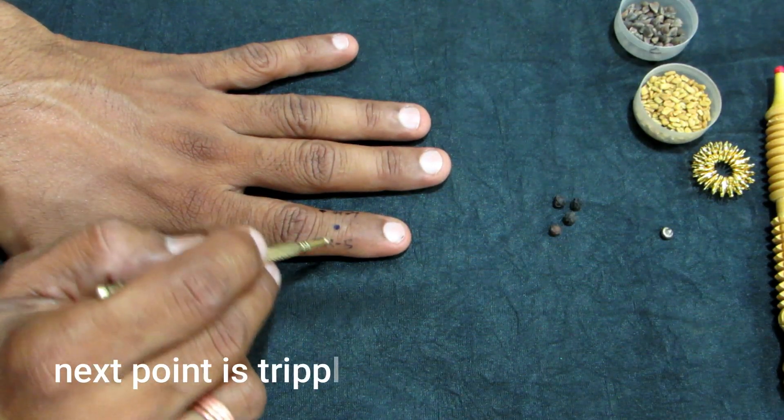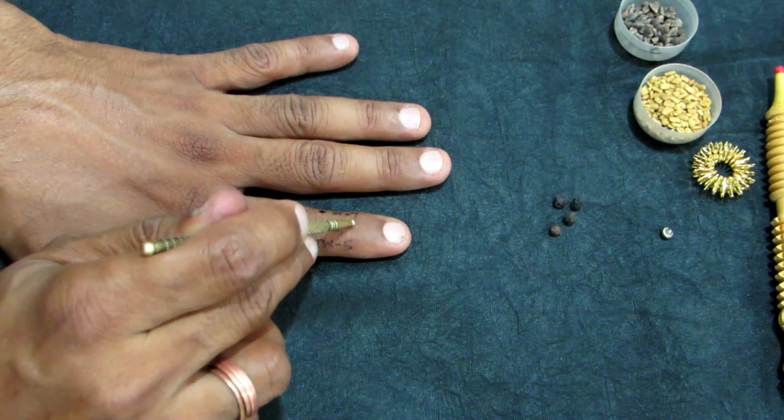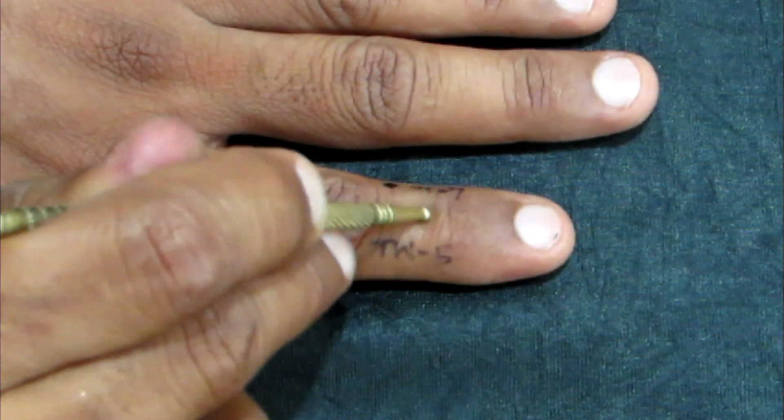Friends, our next point is triple warmer point. It is situated just below the upper portion, below the crease here. Stimulate this point also.